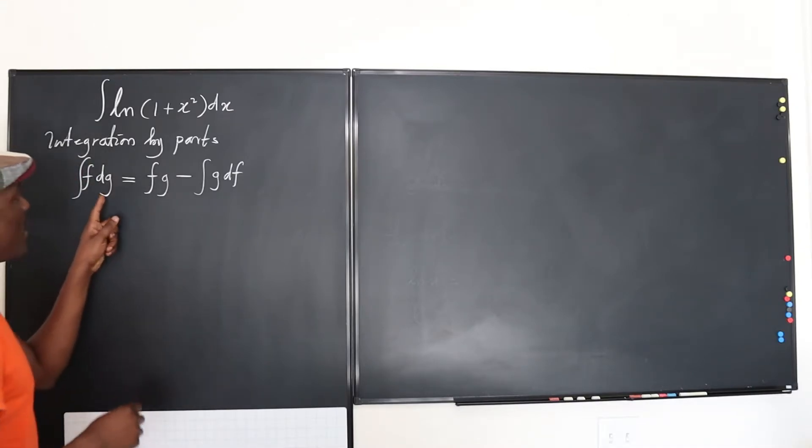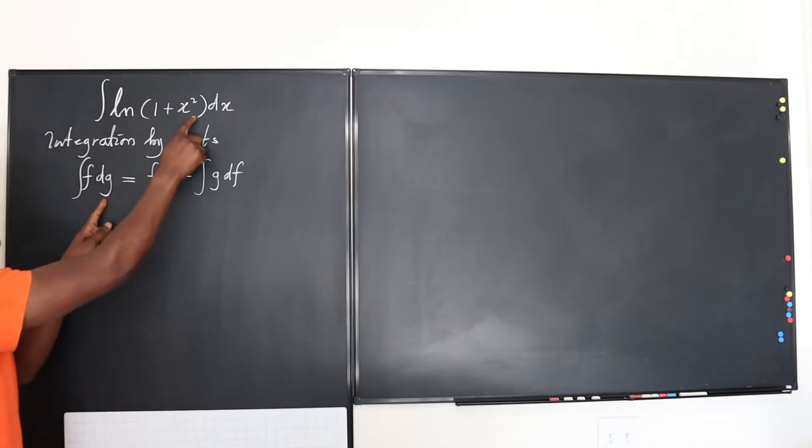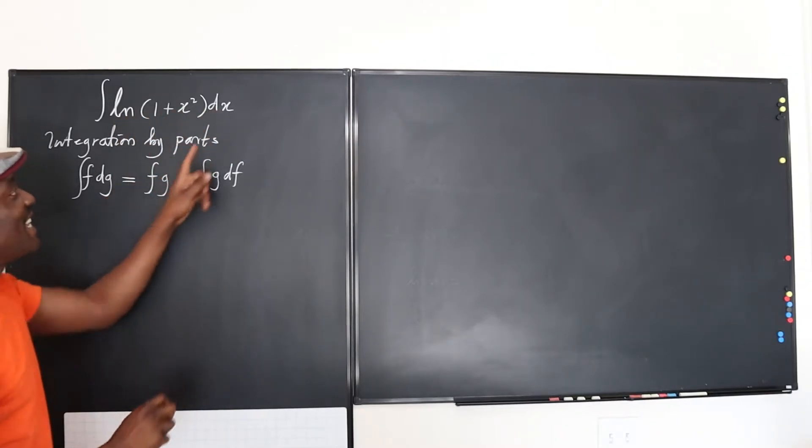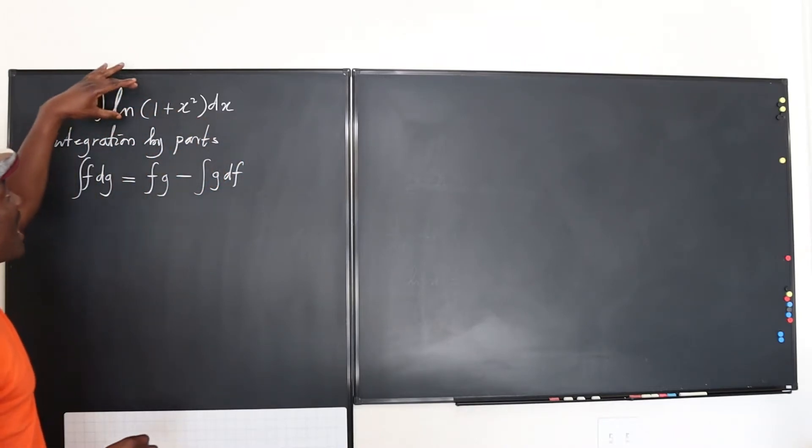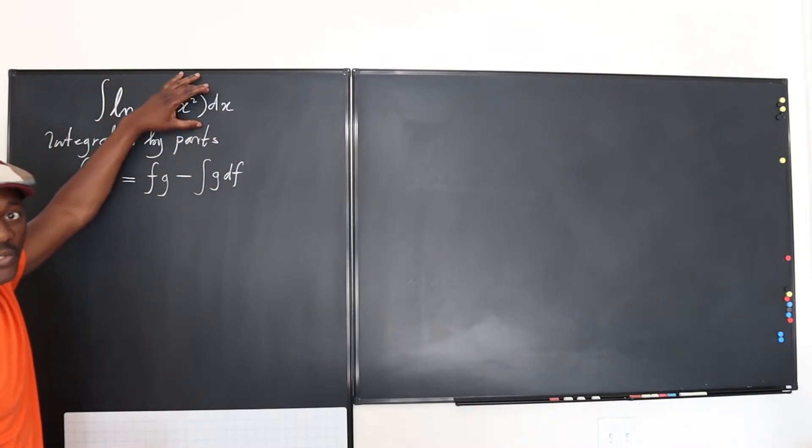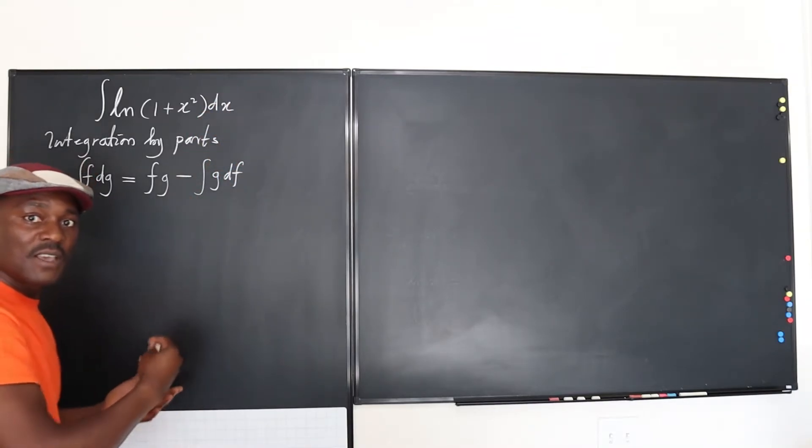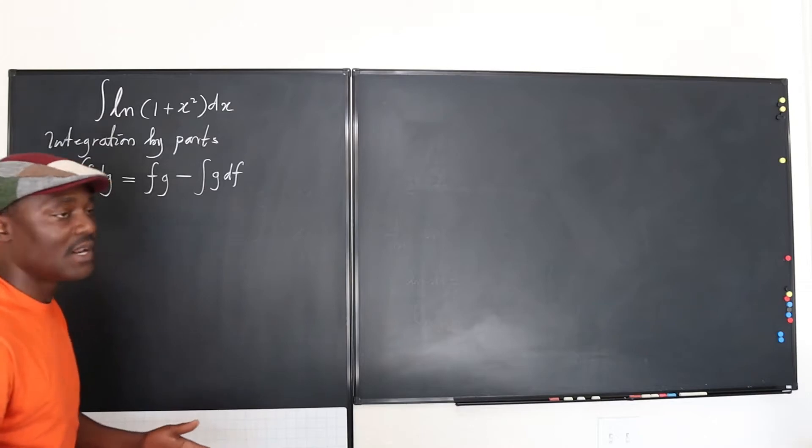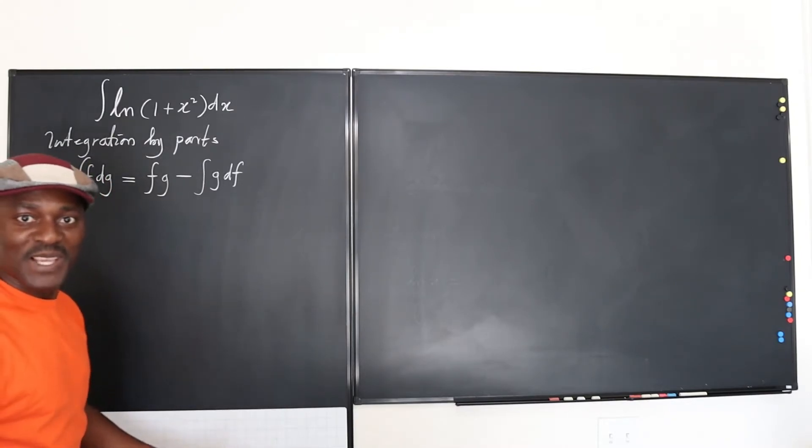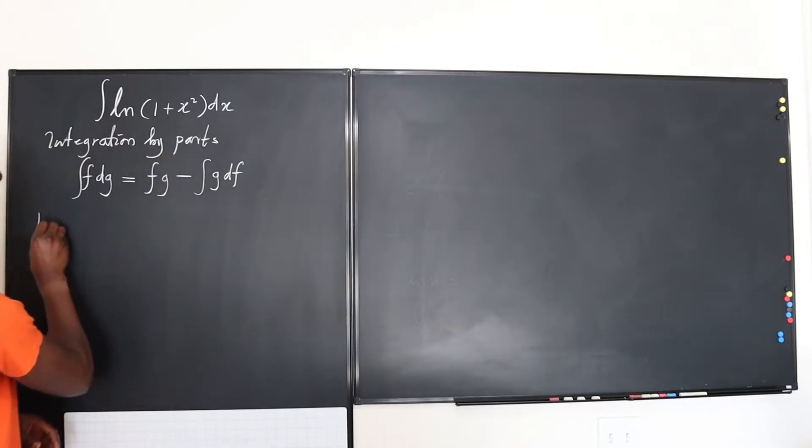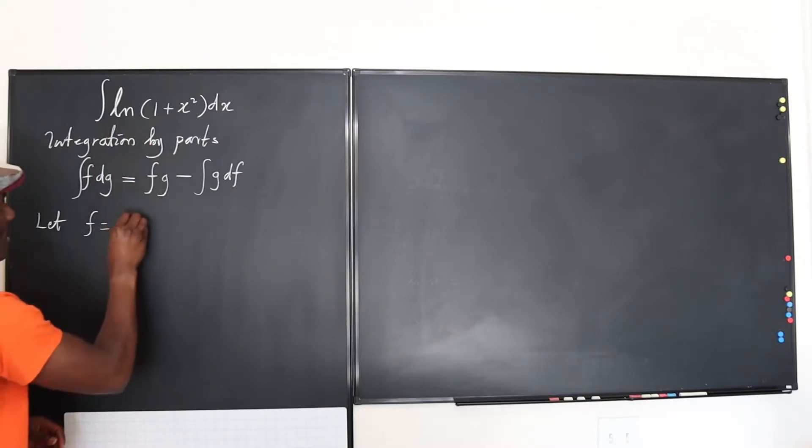f for natural log. Okay, so we can rewrite this expression right now. But before we go on, what is dg? Well, dg is... uh-oh. Well, dg has to be dx. Remember that. dg is going to be dx, and f is going to be natural log of one plus x squared. Remember that. If there's another, a second function, that could be your dg, if it's easy for you to integrate it. Otherwise, we might have to look for something else to do. Okay, but for now, we're going to say, let f be equal to natural log of one plus x squared.